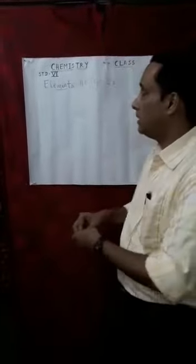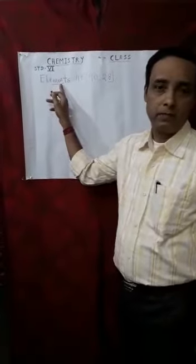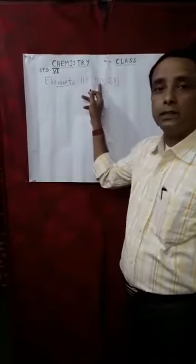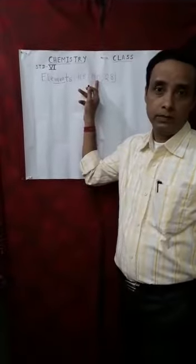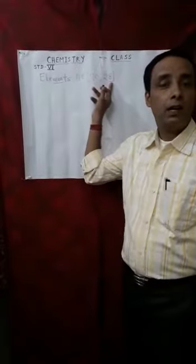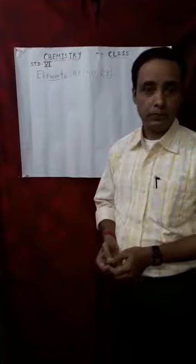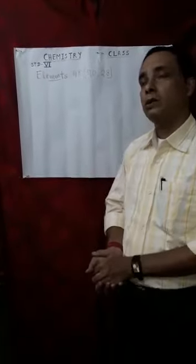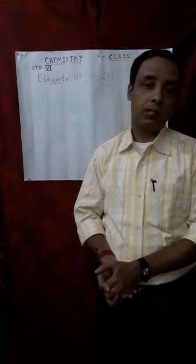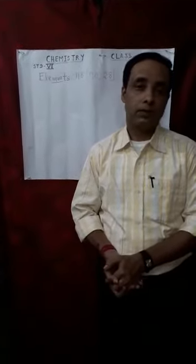There are 118 elements at present. Out of these, 90 are naturally occurring and the remaining 28 are artificially prepared in laboratories. Now, on the basis of physical and chemical properties, elements are further classified.